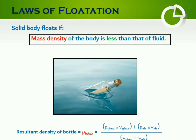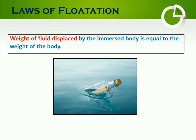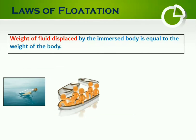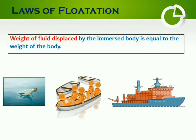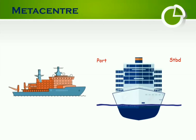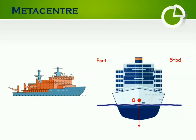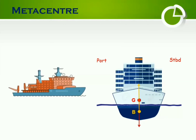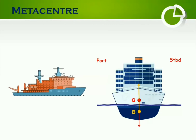According to laws of floatation, for a body to stay afloat, the weight of fluid displaced by the body is to be equal to the weight of the body, as it happens in case of boats and ships. When a body, say a ship, floats in the water, it is under the action of two major forces: the gravitational force, i.e. weight, acting downwards through centre of gravity, and buoyant force, acting upwards through centre of buoyancy. Both centre of gravity and centre of buoyancy are in the same vertical line, and hence the ship is just in equilibrium.